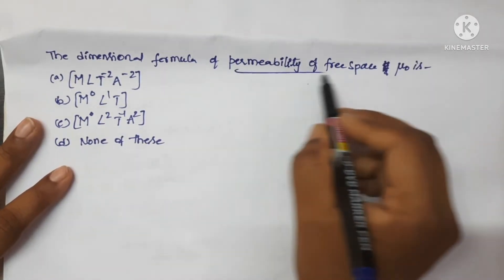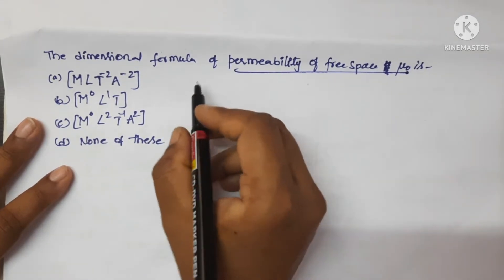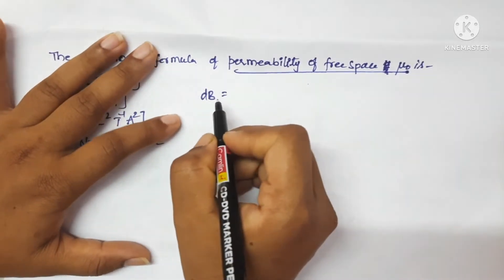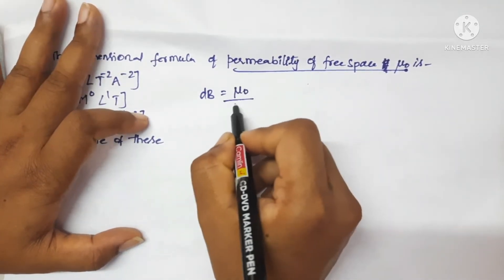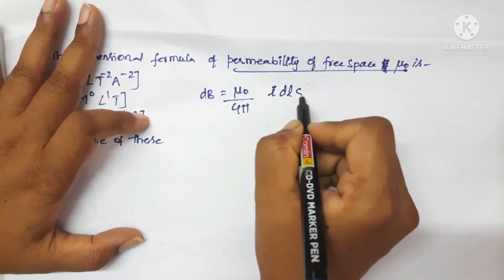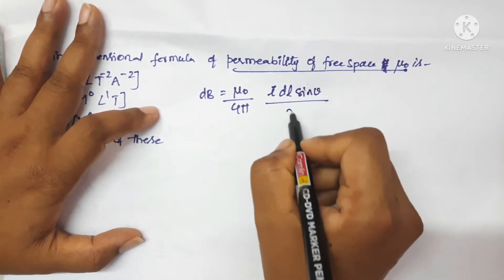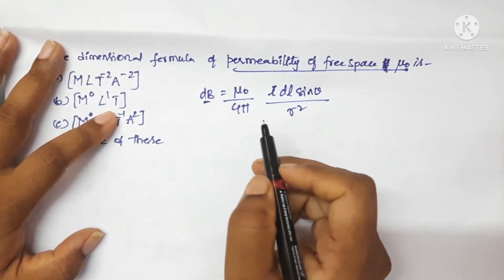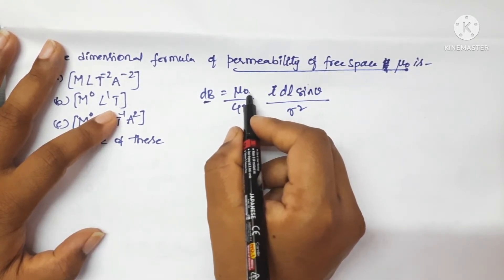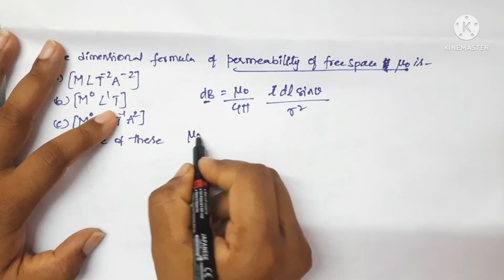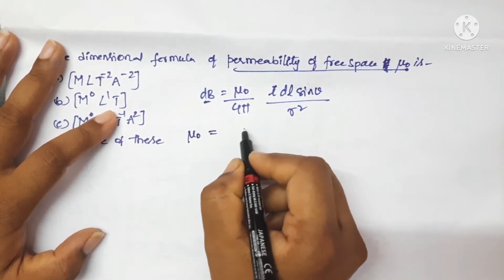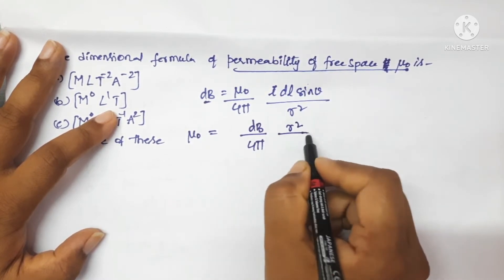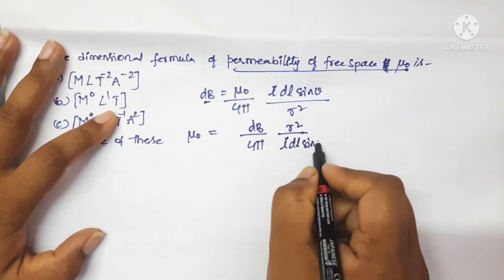Next question: the dimensional formula of permeability of free space. Let us write the formula from Biot-Savart's law: dB = (μ₀ / 4π) × (i·dl·sinθ / r²). So here dB is the magnetic field. Therefore μ₀ = dB × 4π × r² / (i·dl·sinθ).